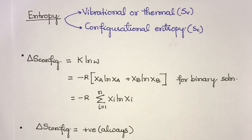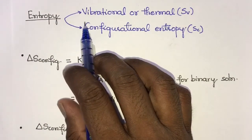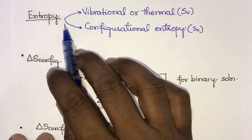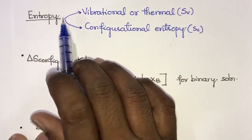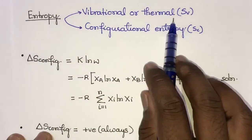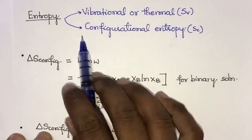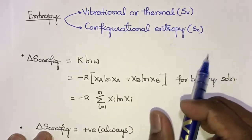Hello friends, good morning. I am Sipatel and today I am going to discuss about configurational entropy. Entropy is the degree of randomness inside a material, and entropy is of two types: vibrational or thermal entropy, and configurational entropy.